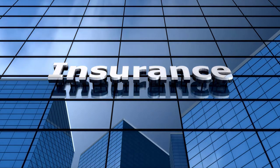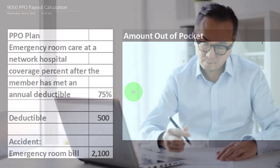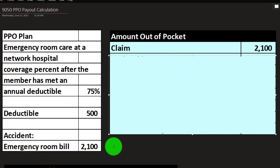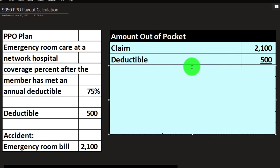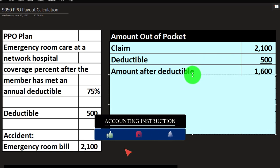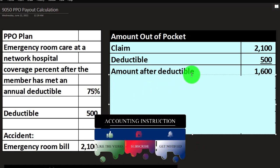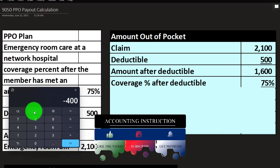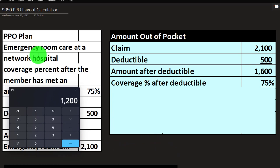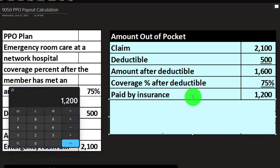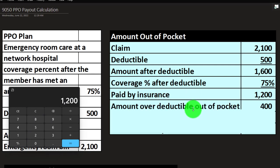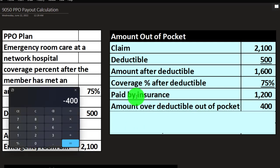This is a great problem for working on your tables — highly recommend putting this in Excel. So: the claim is $2,100 for the emergency room bill. The deductible — the amount we have to pay — is $500. The difference is $2,100 minus $500 = $1,600. The insurance company pays 75% of the amount above the deductible: $1,600 × 0.75 = $1,200. That means we pay the remaining $400 of the amount over the deductible.